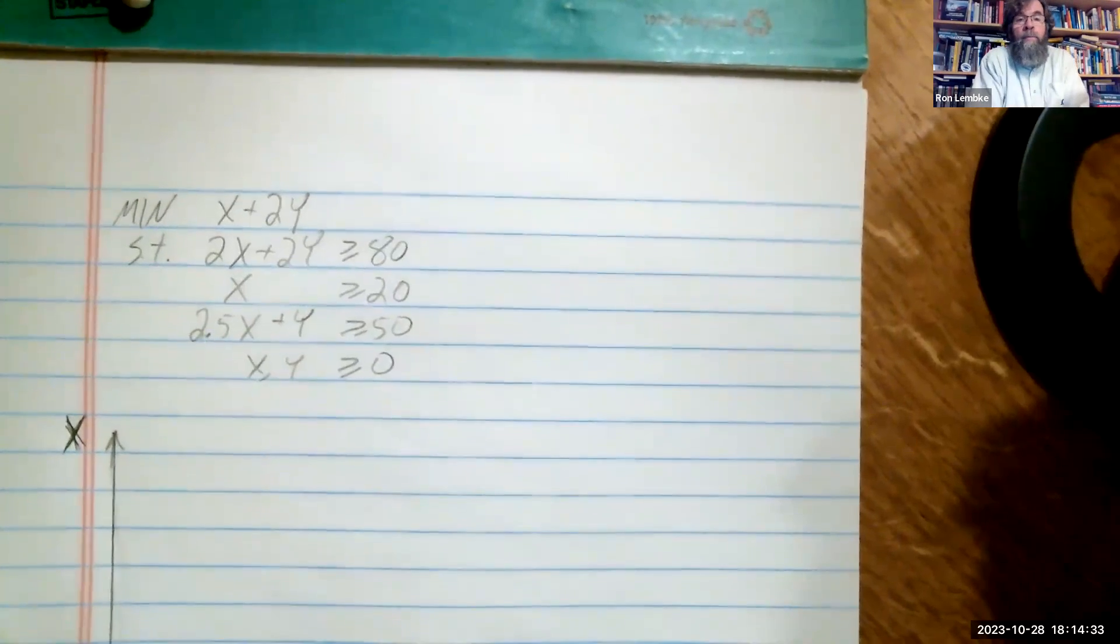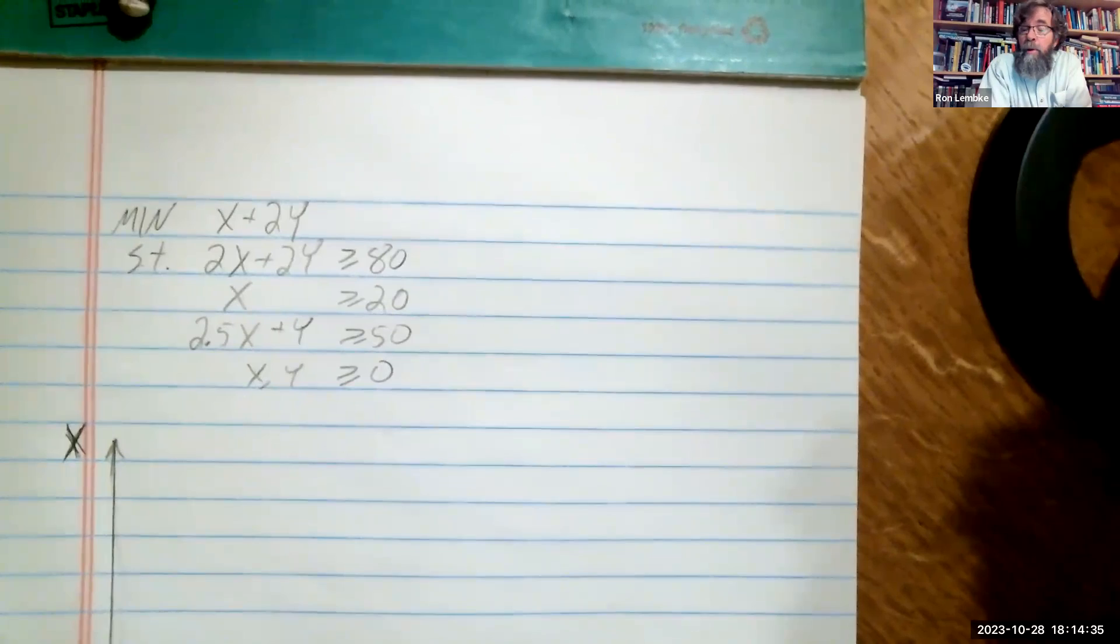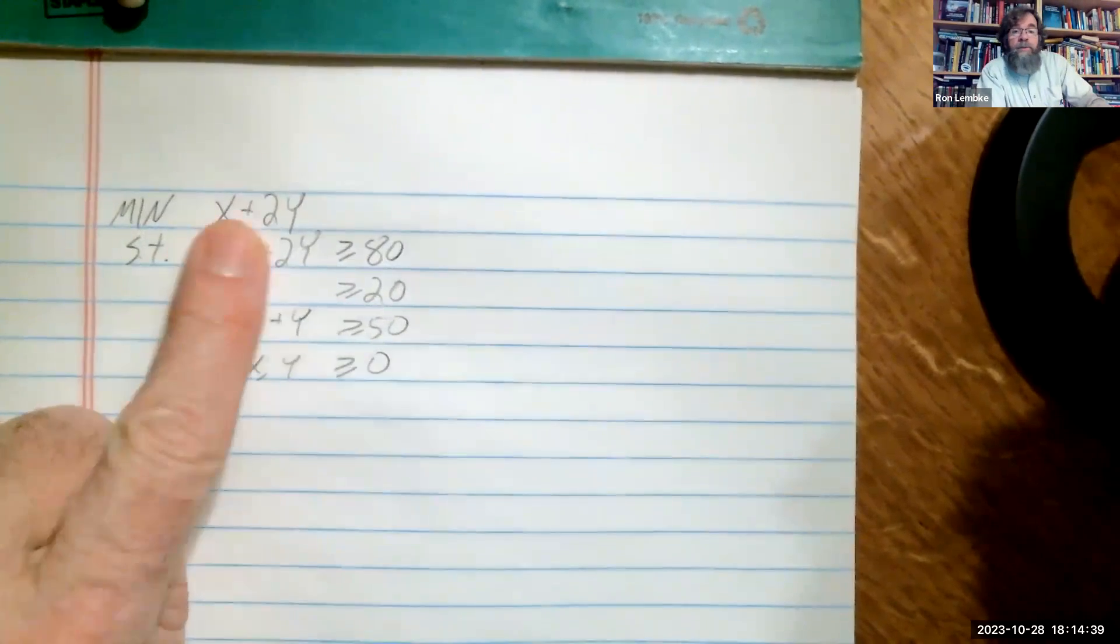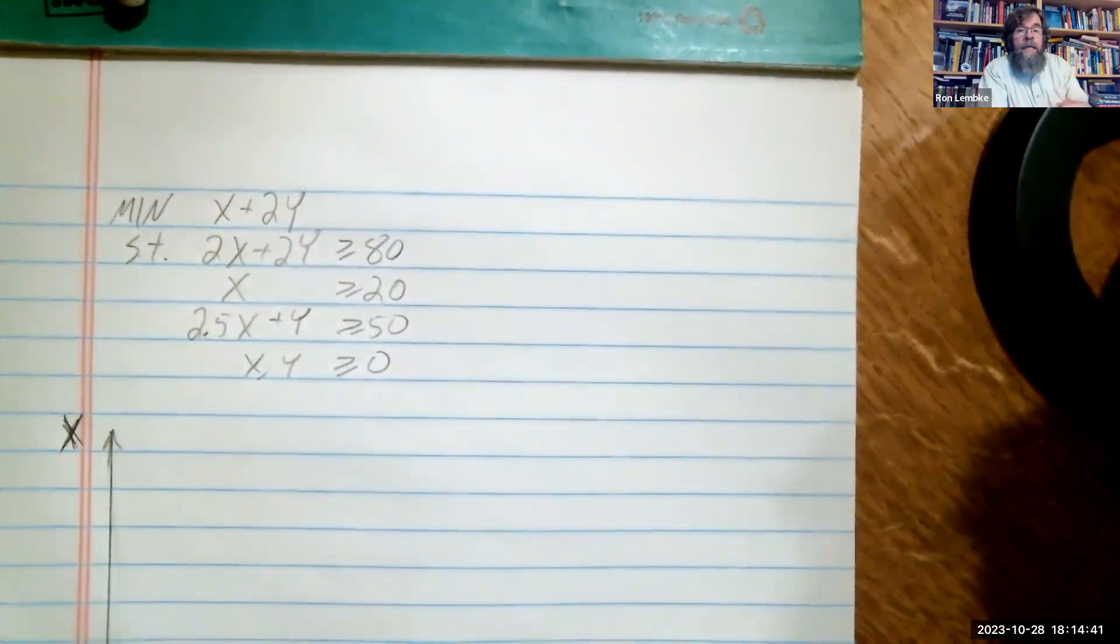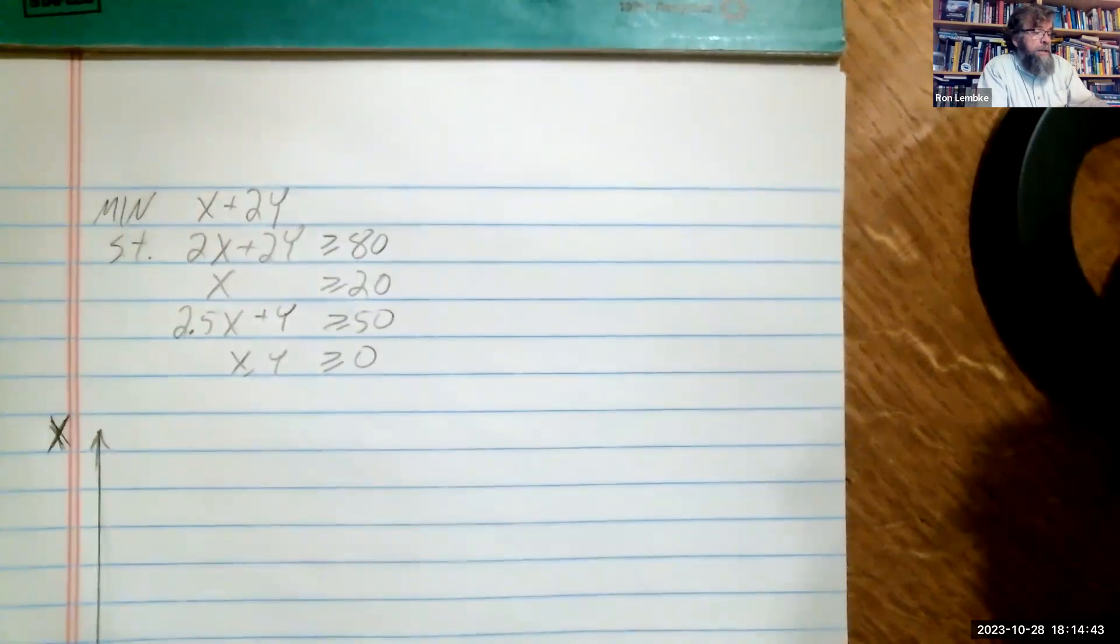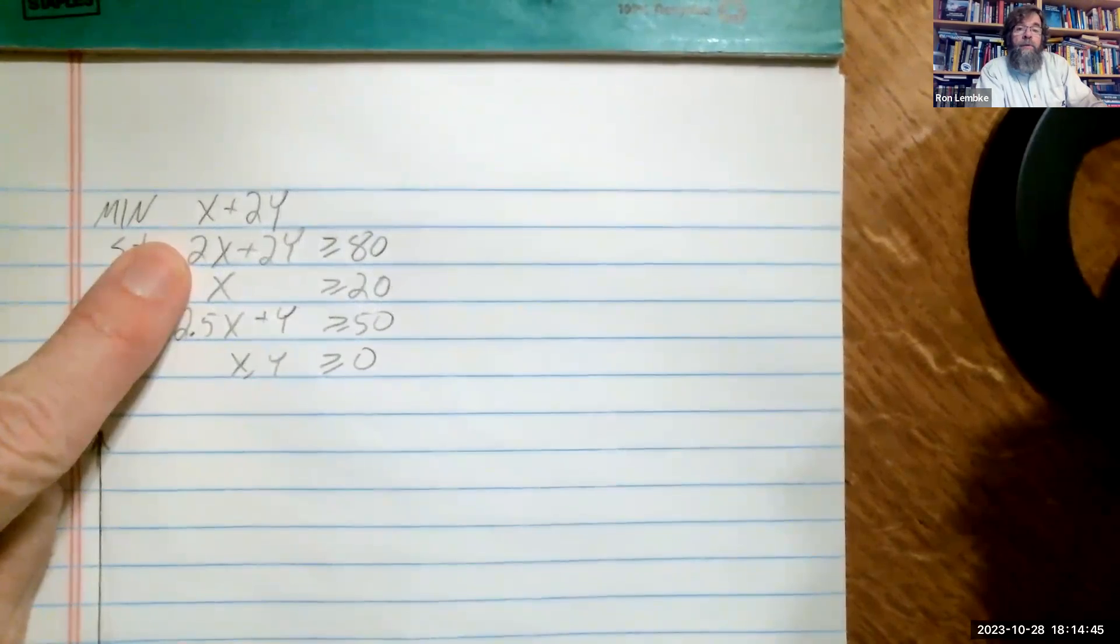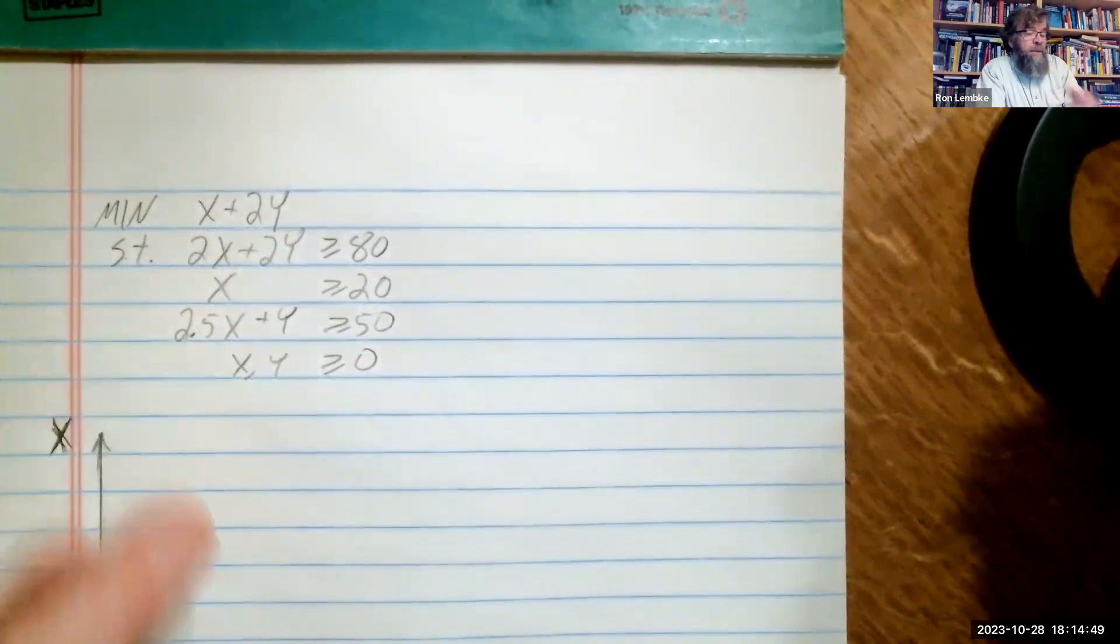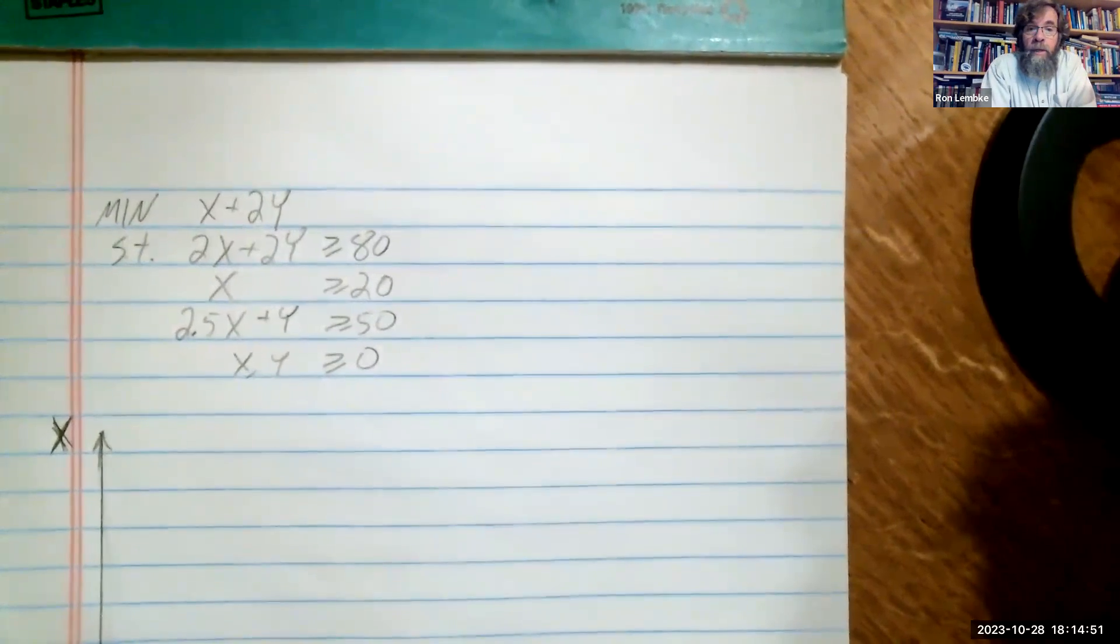Hello. On this video, we will be solving a linear programming problem. We will be minimizing x plus 2y. So we have two variables, and we have three constraints. 2x plus 2y is greater than or equal to 80, x is greater than or equal to 20, and 2.5x plus y is greater than or equal to 50.